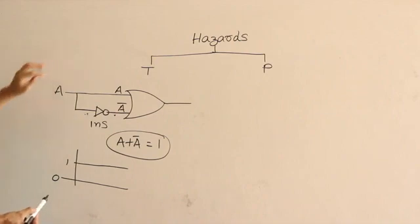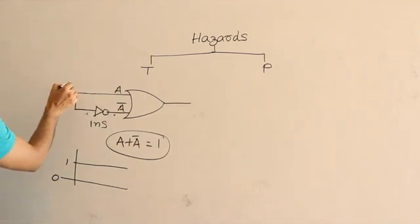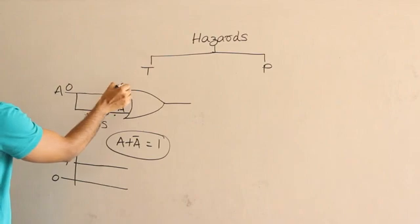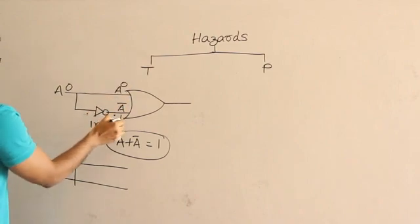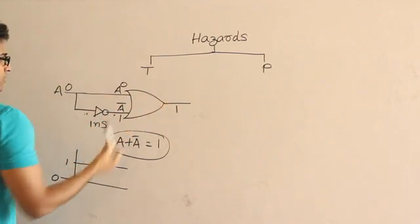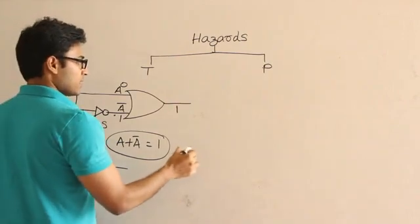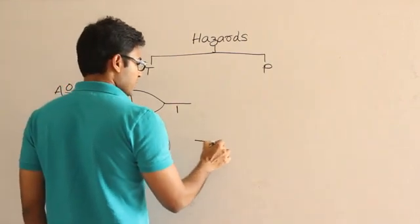See what could happen. Initially assume that the value of this one is 0, A is 0. Therefore the value of this one is 0. And the value of this one is 1 and now the signal is at 1.